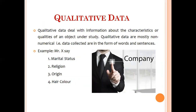So what is qualitative data? Any data that are collected where the information about a subject of interest is expressed in terms of characters, words, or terms — those kinds of data are called qualitative data. For example, Mr. X's marital status (married), religion (Christian, Buddhist, Hindu, or Muslim), origin (African American, Indian), or hair color (red, black, blonde, brown) — all these are qualitative data.